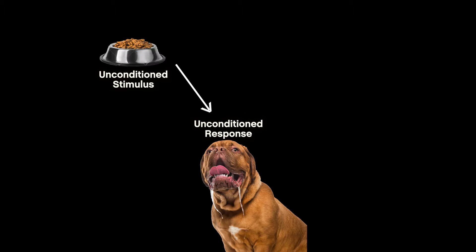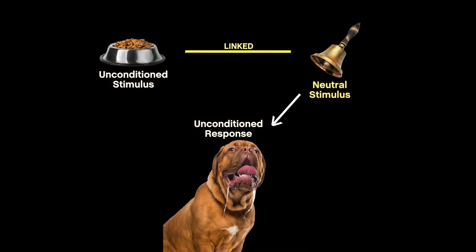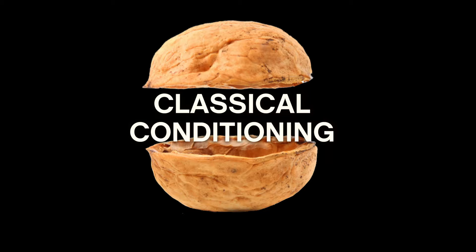He rang a bell every time the dog was about to be fed, and after a short period of time the dog would salivate just to the sound of the bell, whether the food was there or not. Initially, an unconditioned stimulus — the food — produced an unconditioned response. The neutral stimulus, the bell, initially produced no conditioned or neutral response. However, when you present the unconditioned stimulus at the same time as the neutral stimulus, the dog associated them together. Thus, the neutral stimulus was now conditioned and produced a conditioned response. This is classical conditioning in a nutshell.